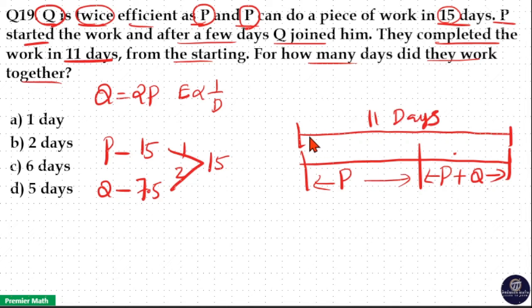Now you can see all these 11 days P worked. So work completed by P in 11 days equals 11 into efficiency of P is 1 unit. So 11 units is completed in 11 days by P. Here total work is 15 units.